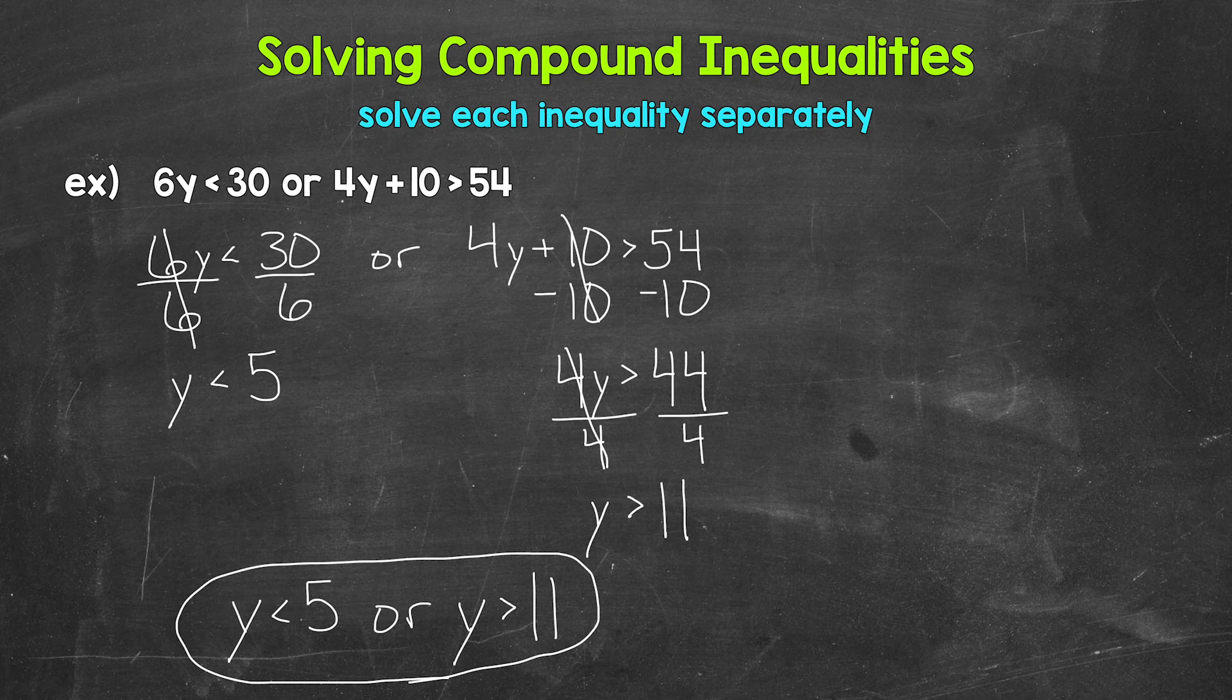Now remember, when it comes to compound inequalities involving OR, they are true, we have a solution if either inequality is true. That means that y can be anything less than 5 or y can be anything greater than 11. Any number less than 5 or greater than 11 is a solution of this compound inequality. It will make the compound inequality true.